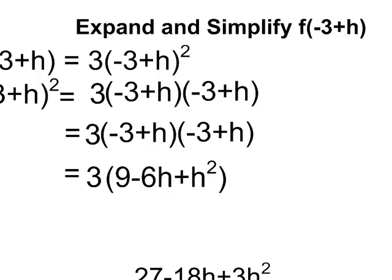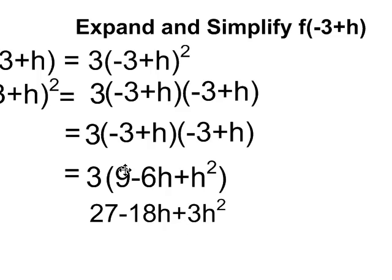Now when I expand that bracket, I end up with 27, which is 3 times 9, minus 18h, which is 3 times negative 6h, plus 3h squared, which is 3 times h squared.